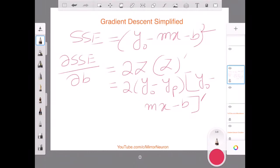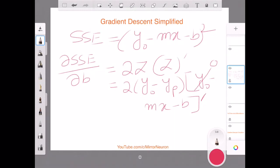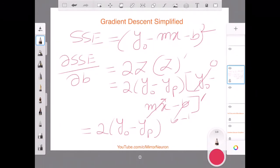So again, I know that y0 is the original value, so this will go to 0 because it will not change. Again, m has no contribution or influence because of b, so this will be 0 again. And this one will be minus 1. So your final result will be 2 times y naught minus y predicted times minus 1, which I can write here.